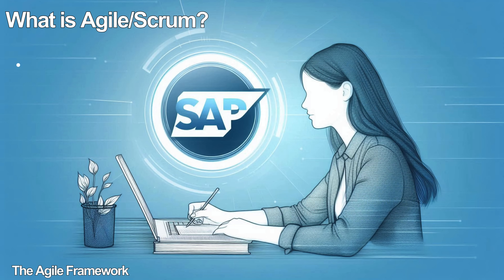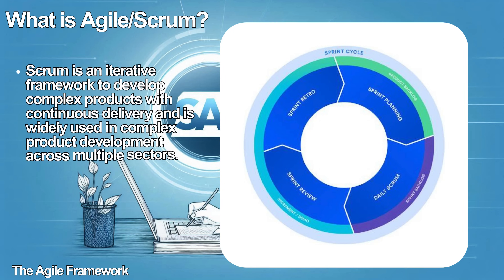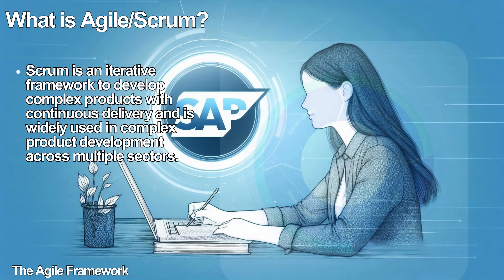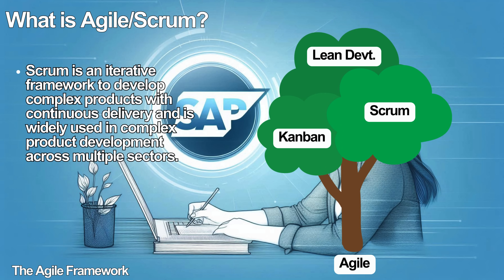Now let's talk about Scrum. Scrum was invented in the early 1990s, much before the formation of the Agile Manifesto. Scrum is an iterative framework to develop complex products with continuous delivery and is widely used in complex product development across multiple sectors. Unlike other methodologies, it is characterized by being lightweight, simple to understand, and difficult to master. Scrum is a type of Agile methodology.